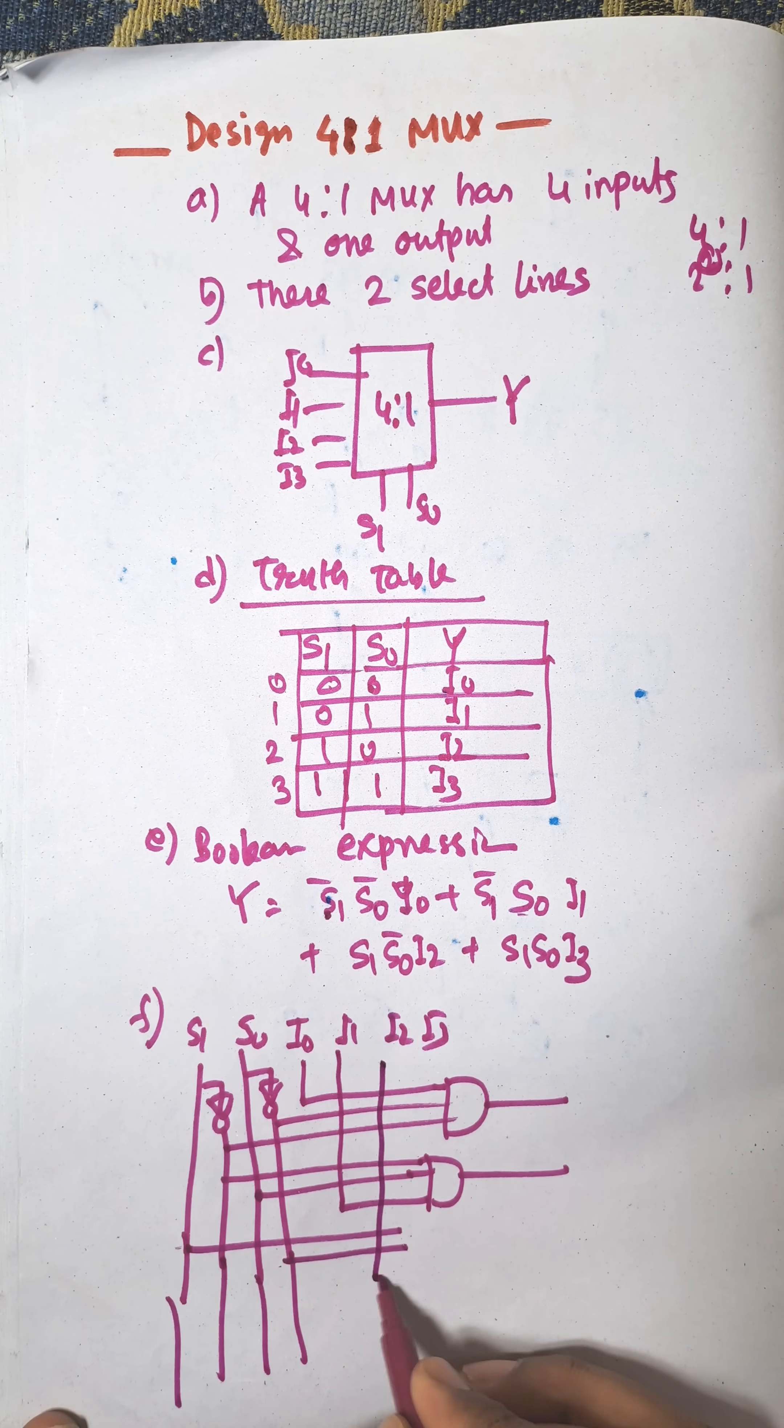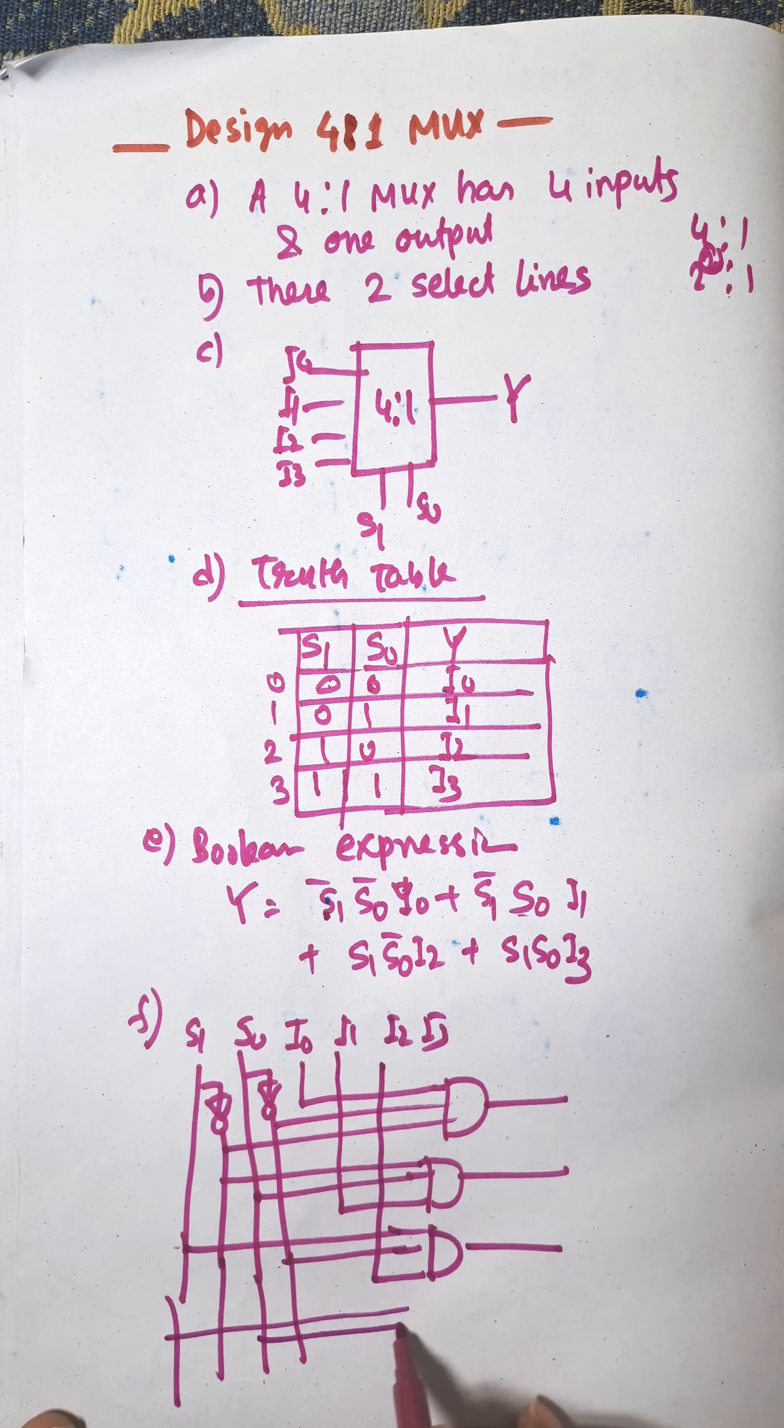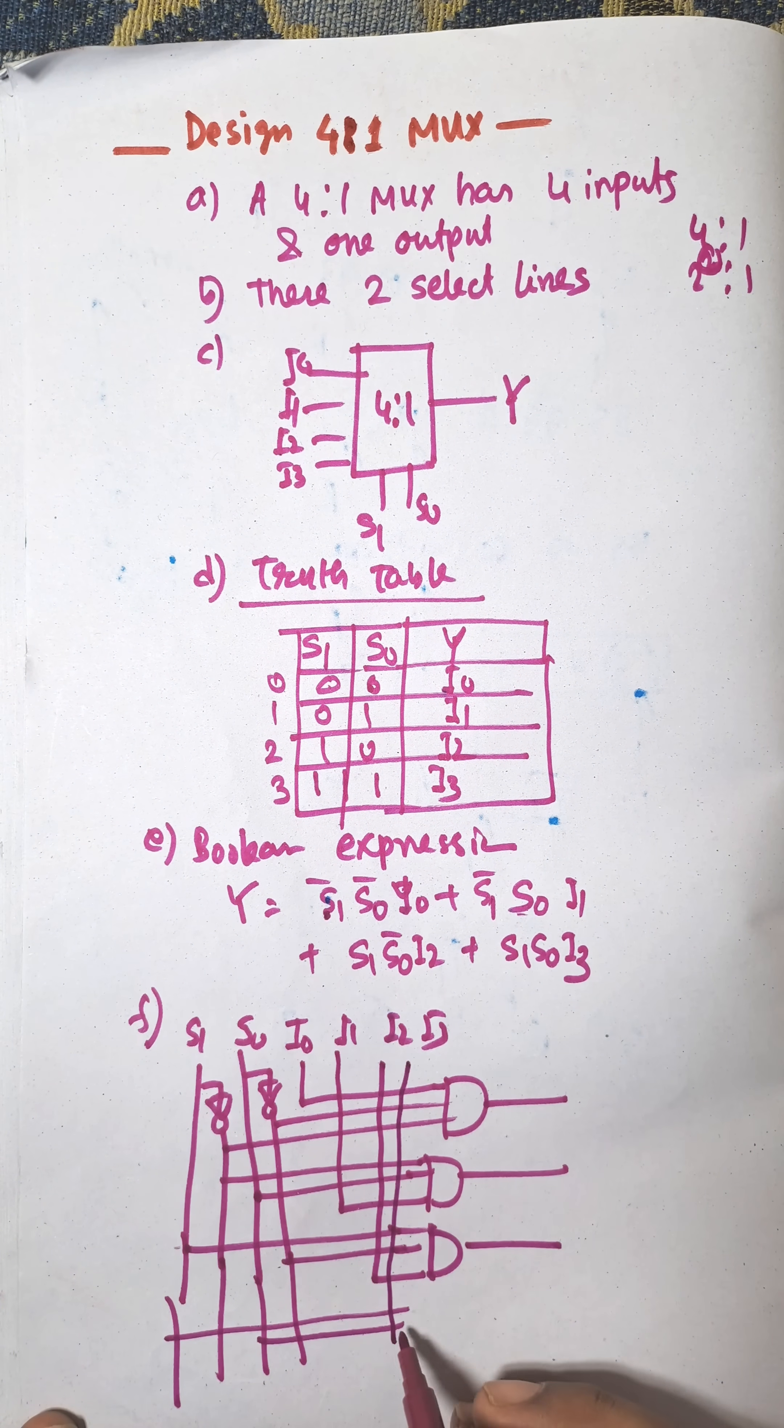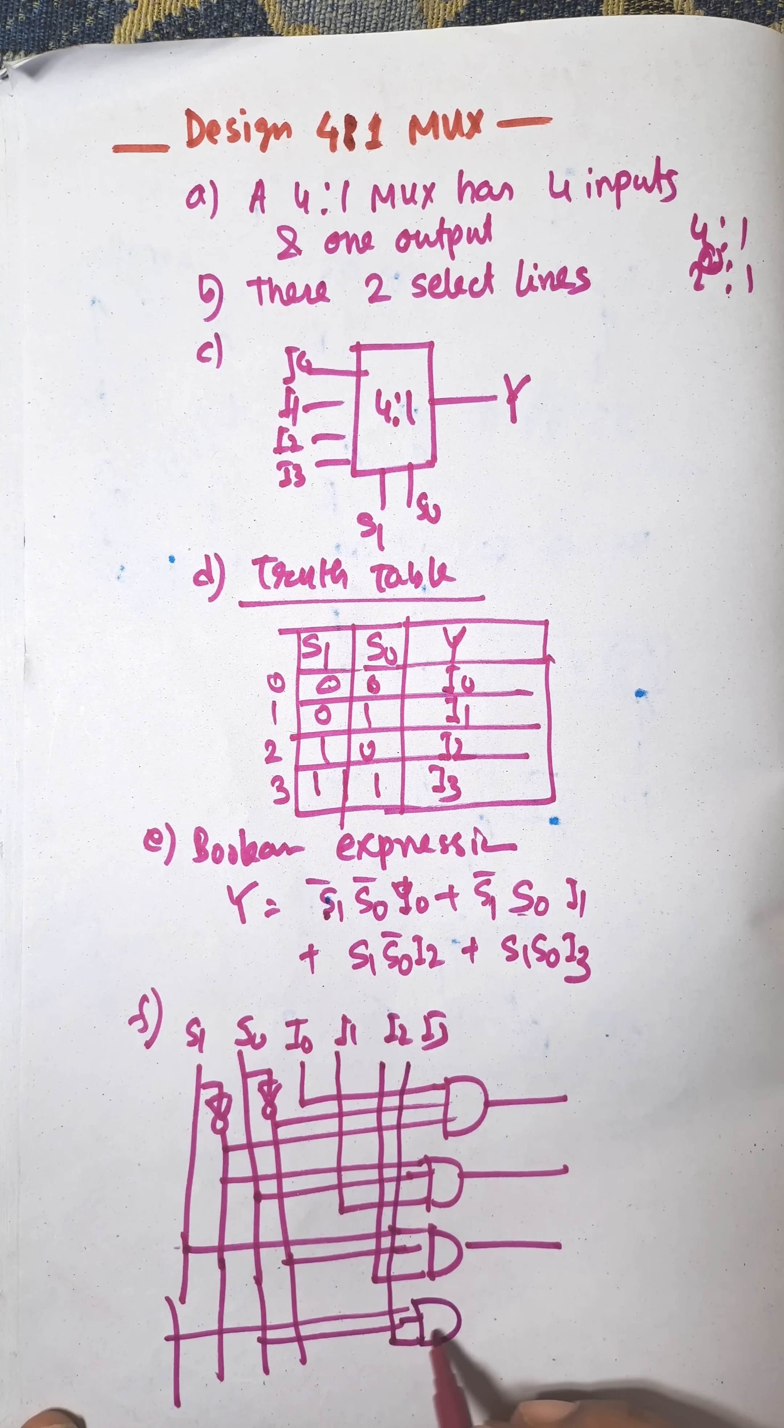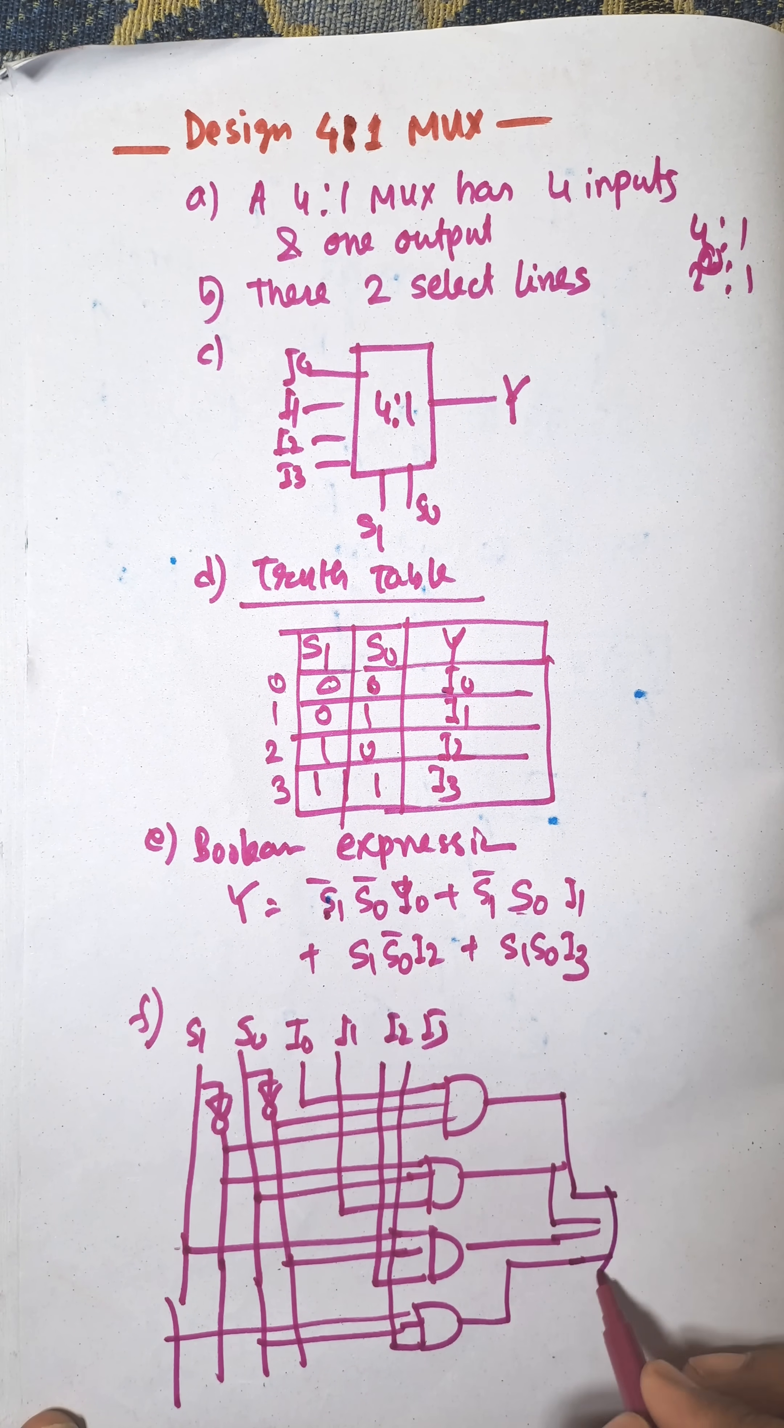Next is S1, S0 bar, and I2 using an AND gate. Next, S1, S0, and I3, and this is the AND gate. And we need to add those AND gates using an OR gate.